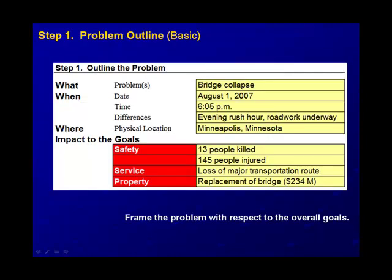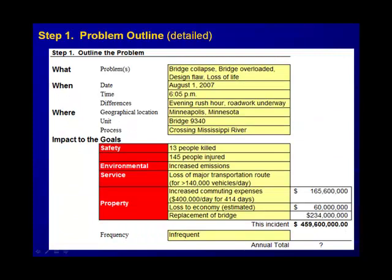It's a simple outline with those questions: when, impacted goals. Obviously, people would say the problem is the bridge collapsed, and it's got the date and the time, and ask what was different and then where this happened. This investigation doesn't start with a bridge collapse. It starts with the fatalities, the loss of life, and the severe injuries, the 145 people that were injured, the 13 fatalities, the loss of the bridge, the property, the replacement of the bridge.